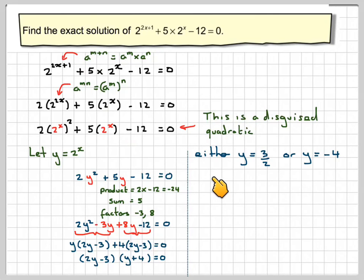So either y is equal to 3 over 2, or y is equal to minus 4. But y is 2 to the x. So you're going to have 2 to the x is equal to 3 over 2, or 2 to the x is equal to minus 4. Now in this case, it's just not possible, because any a to the x is greater than 0 for all x, providing that a is positive.